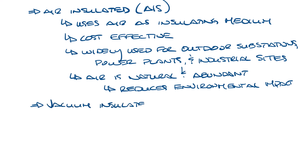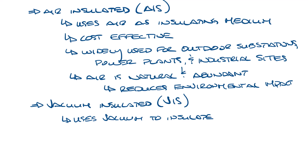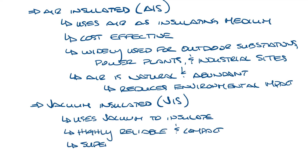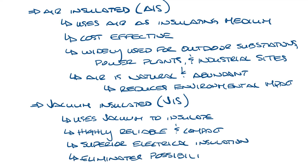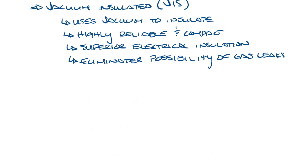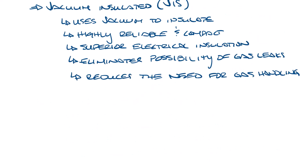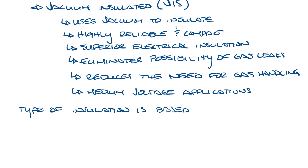And then we have vacuum insulated switchgear, VIS. This uses a vacuum environment to prevent arcing, making it highly reliable and compact. It offers superior electrical insulation properties and eliminates the possibility of gas leaks, reducing the need for gas handling procedures, which enhances safety. You'll see it in medium-voltage applications like commercial buildings and manufacturing plants. Each type of insulation is chosen based on space, cost, and environmental considerations.